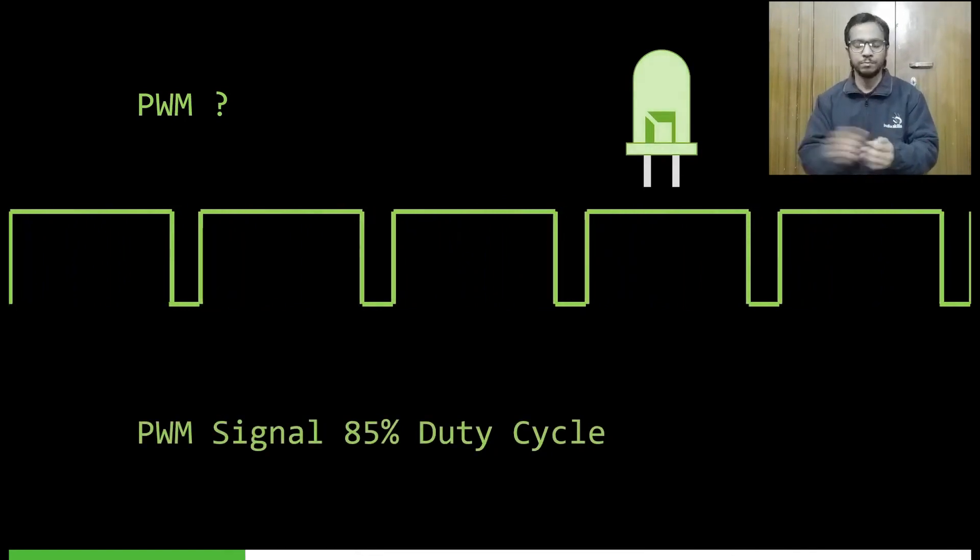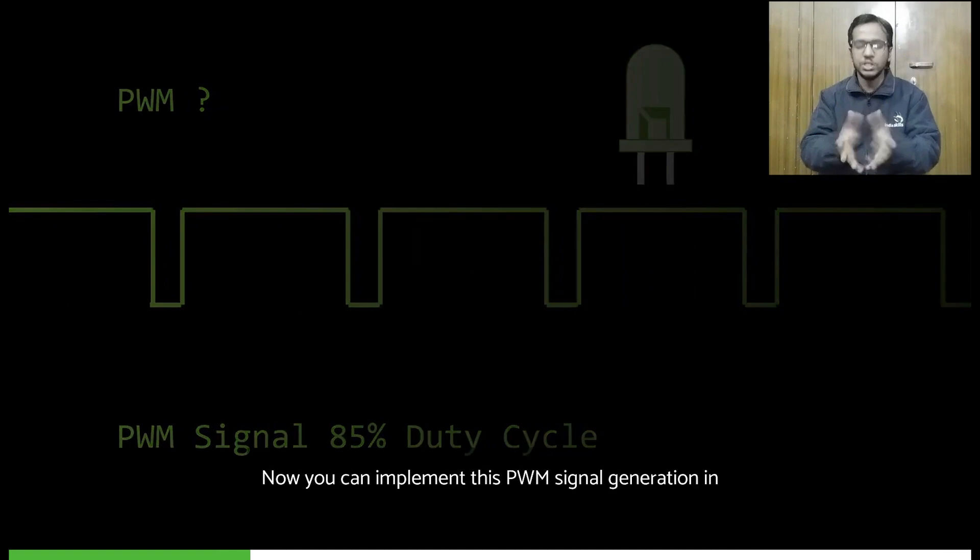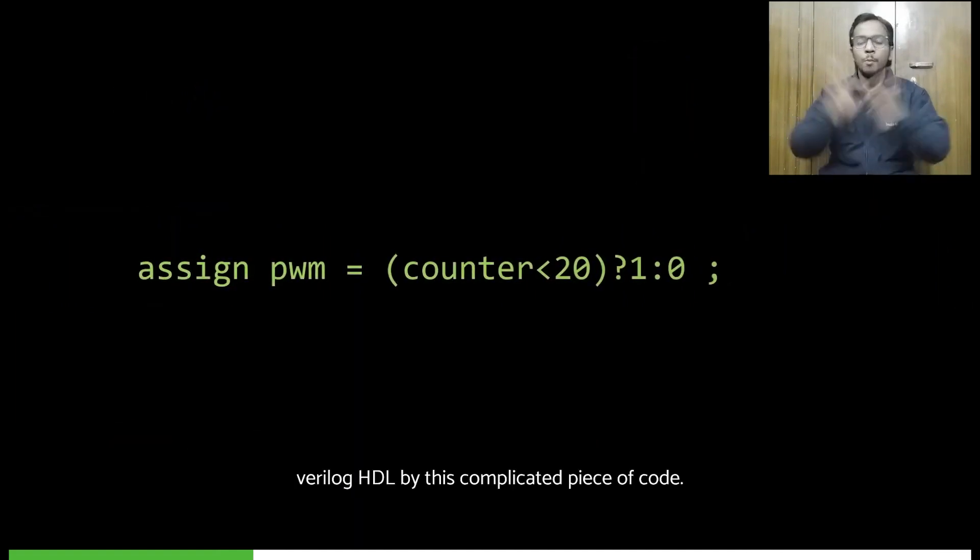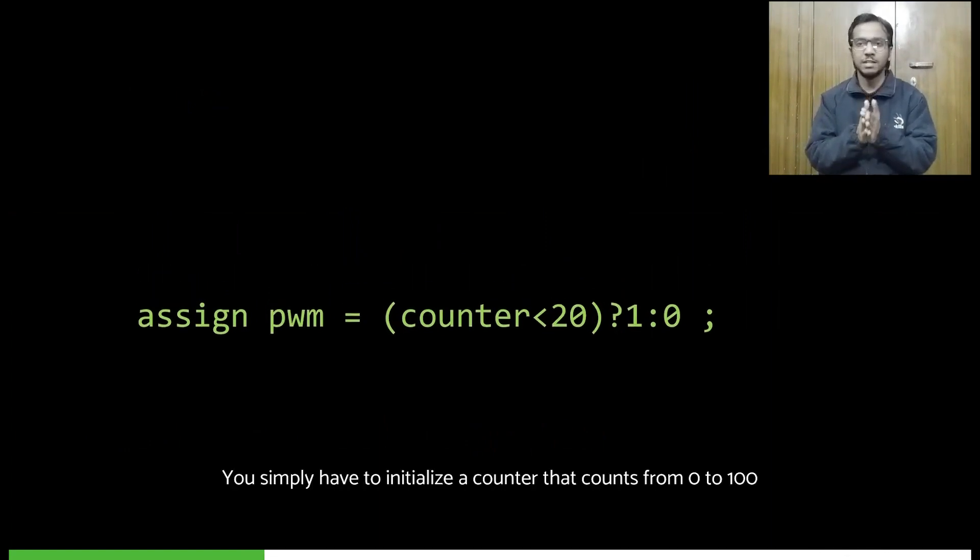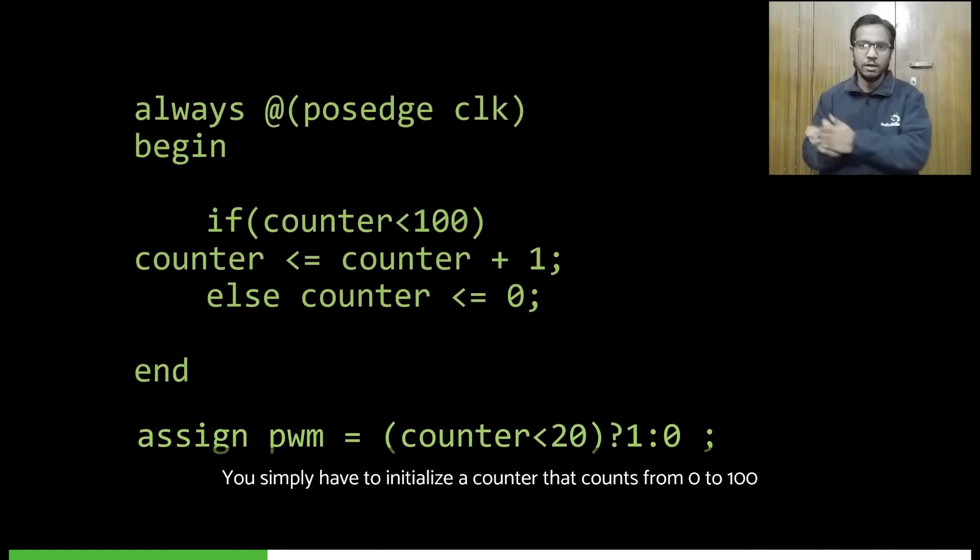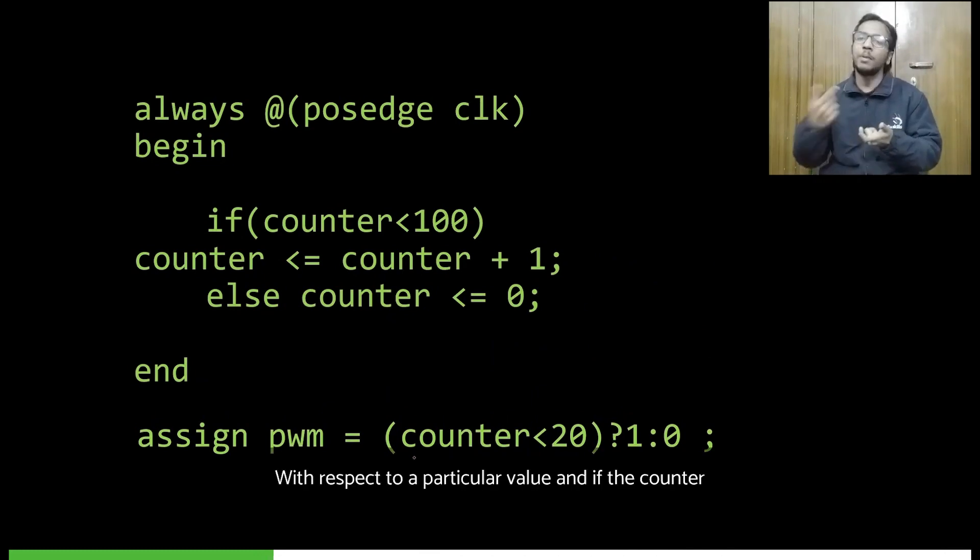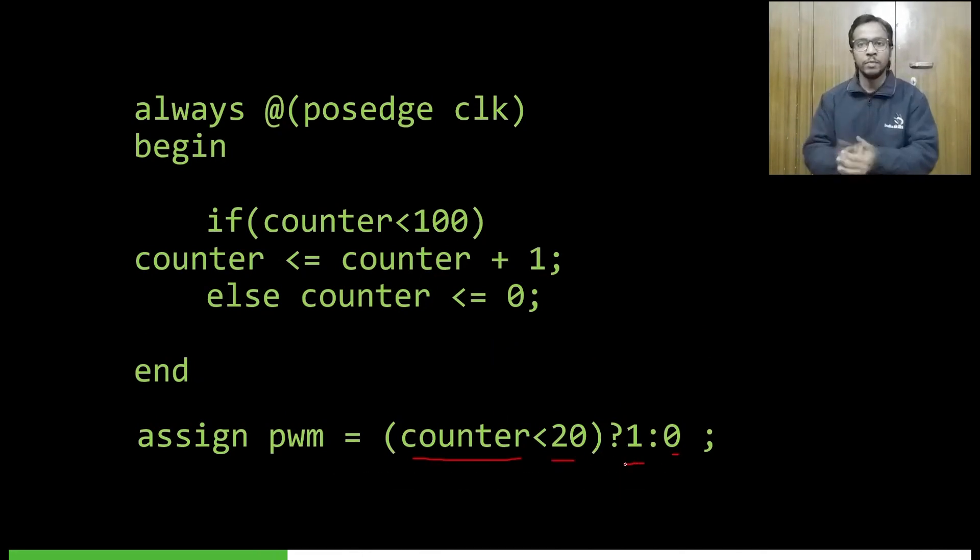So that is how PWM signal works. Now you can implement this PWM signal generation in Verilog HDL by this complicated piece of code that is in front of your screens. Yeah, that's it. You simply have to initialize a counter that counts from 0 to 100, continuously check that counter with respect to a particular value, and if the counter goes above that value you set it to zero. When it's below that particular value—that is your duty cycle—it remains as one. That is all we have to do. But here, if we want eight different PWM outputs, we'll have to use eight different counters and eight different assign statements. That would make the hardware much more complex. This is where shift registers come in.